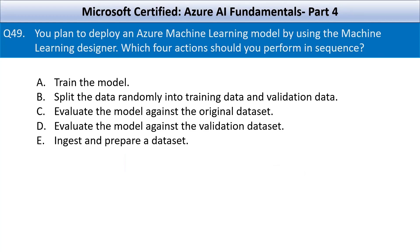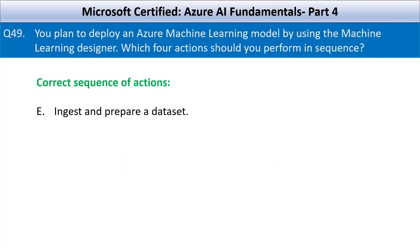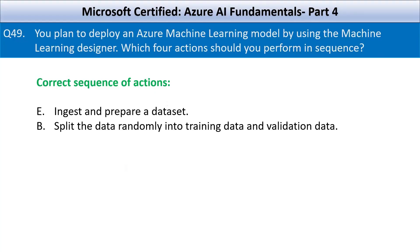This step involves importing the data set and performing any necessary data transformations such as normalization or handling missing values. After preparing the data set, it should be split into two subsets: training data and validation data. Training data is used to train the model, and validation data is used to evaluate how well the model performs on data it hasn't seen during training.